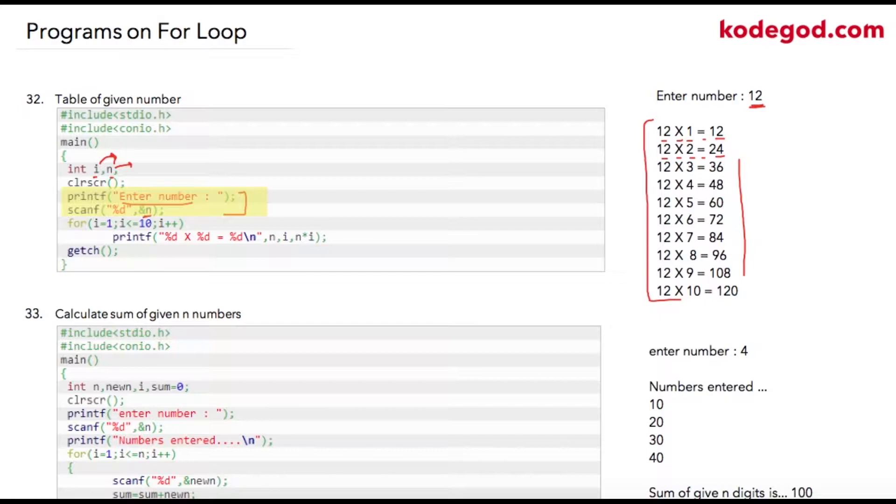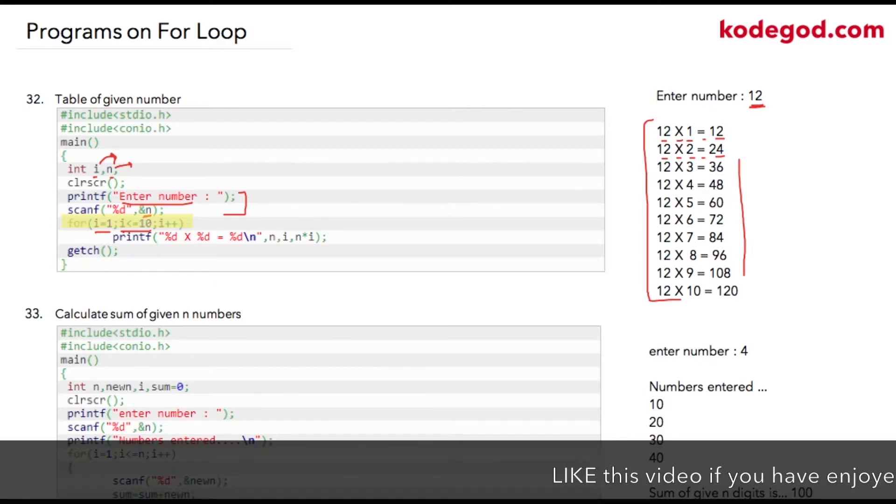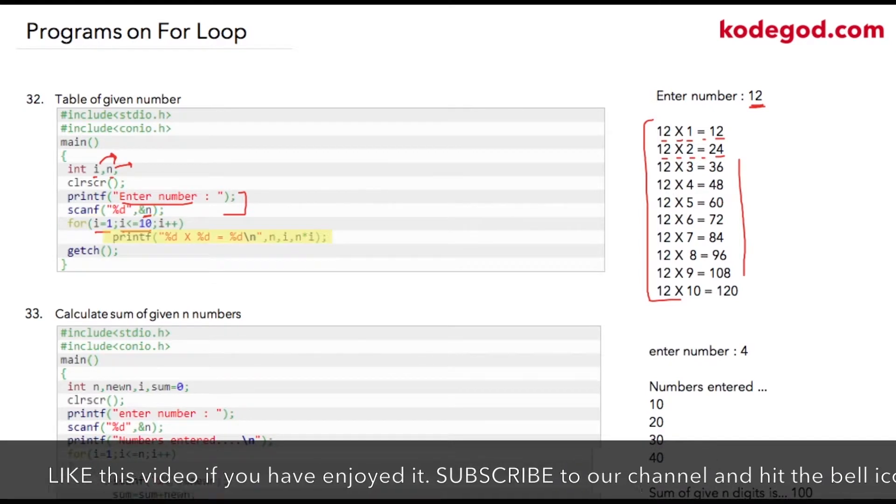Inside my for loop, I am initializing i to 1. My condition will be checked as 1 less than or equal to 10, which is a true condition. This for loop has a single statement, that's why we are not writing parentheses for this block. As our condition is true, the compiler will print this part.